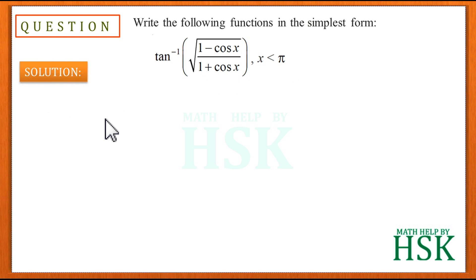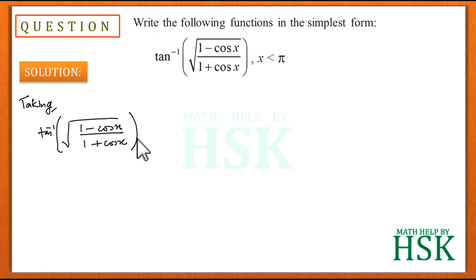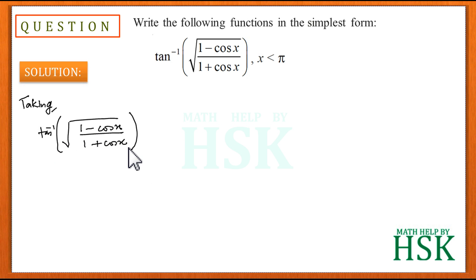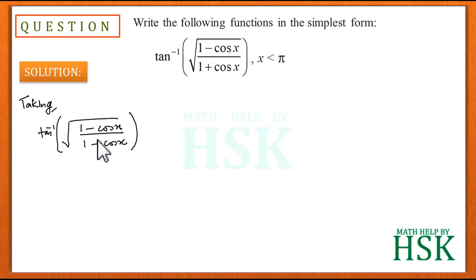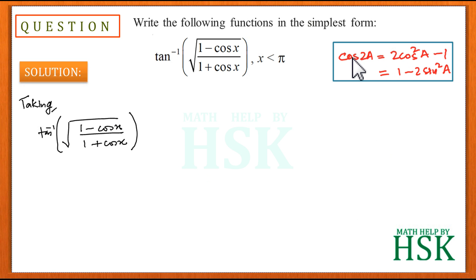To solve this question, we take the given expression. On observing the function, we see we have tan inverse of square root of (1 minus cos x) upon (1 plus cos x). If we can simplify the value inside the square root, we can easily find the simplest form. For that, I take this formula.